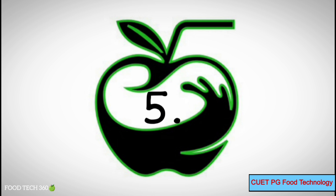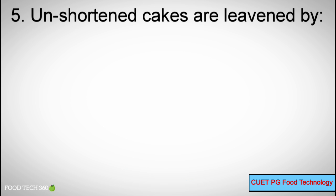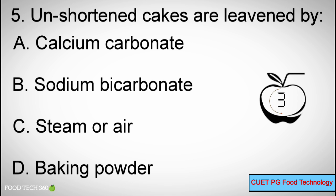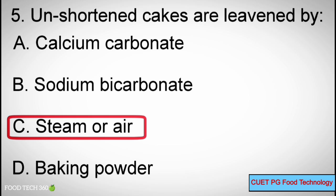Q5. Unshortened cakes are leavened by? A. Calcium carbonate. B. Sodium bicarbonate. C. Steam or air. D. Baking powder. Correct answer: C. Steam or air.